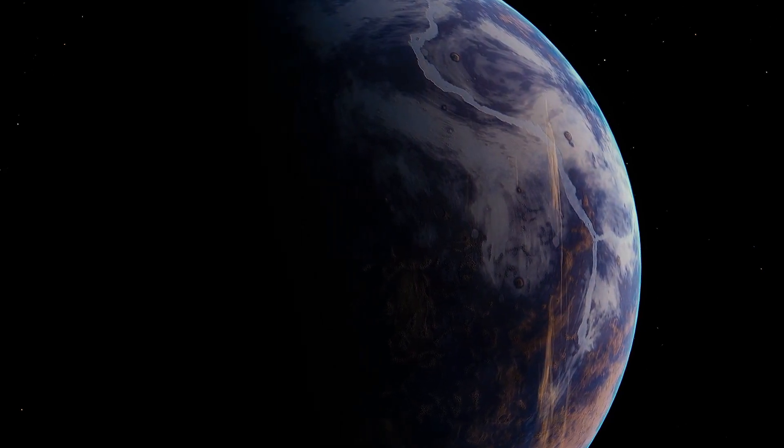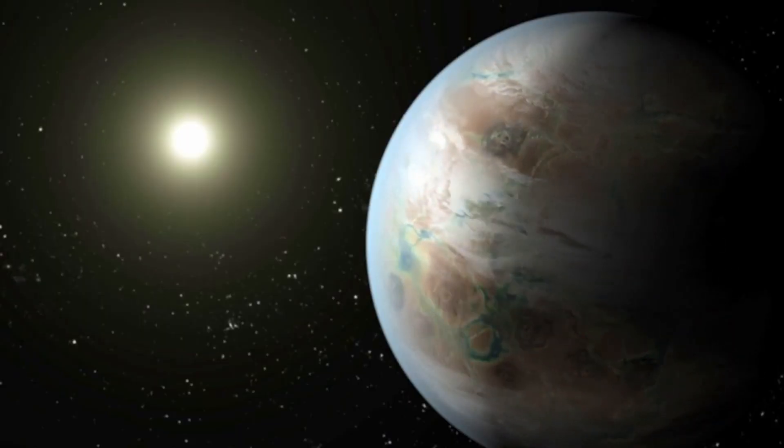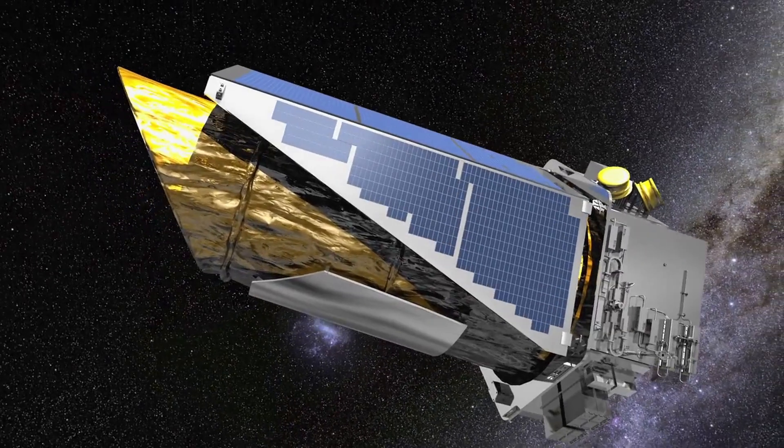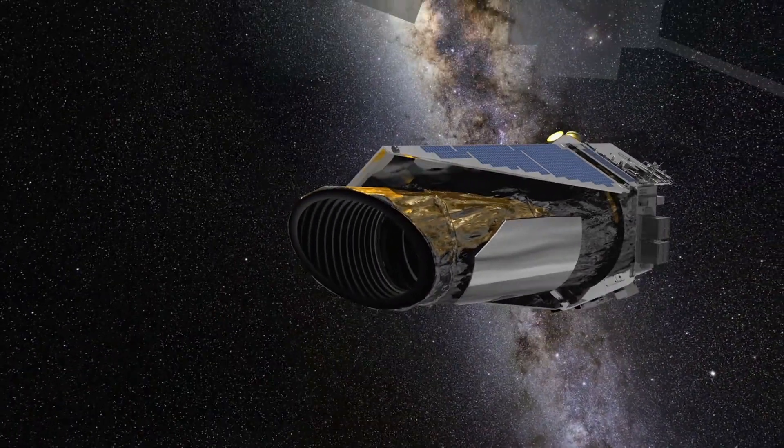Known as Kepler-452b, the planet looked like Earth, as well as it is gigantic. The planet was discovered by the Kepler Space Telescope, announced by NASA on July 23, 2015.